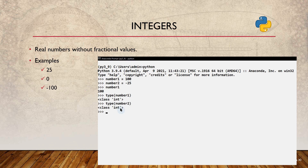Don't worry about the word 'class' in the output here. Actually, everything in Python is an object, which is why we see 'class' in the result. For now, just remember that int is the type of this particular variable, meaning it is an integer.